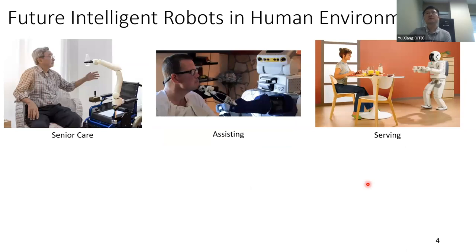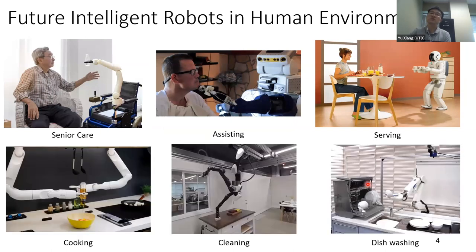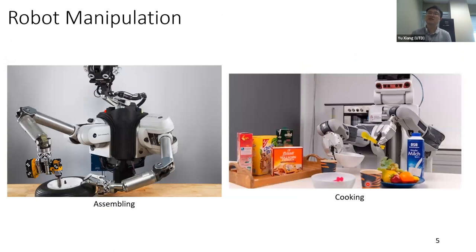We would like to address this question, and you will see why this problem is difficult. In the future, I imagine robots will do a lot of tasks for humans, such as taking care of senior citizens, assisting disabled people, and serving people in various places. We hope to have robots that can cook a meal, clean a kitchen table, or even load a dishwasher. In order to do these tasks, robots need to manipulate objects — for example, assembling and cooking tasks.